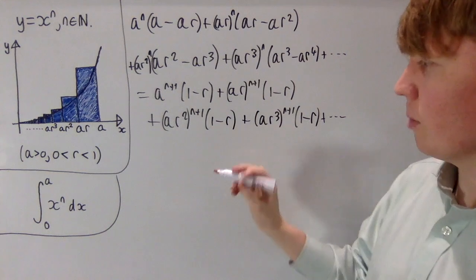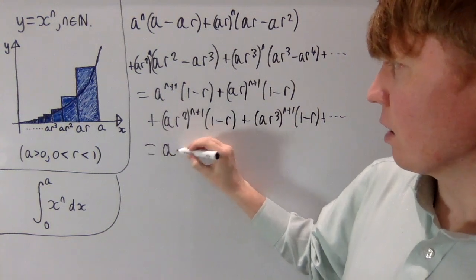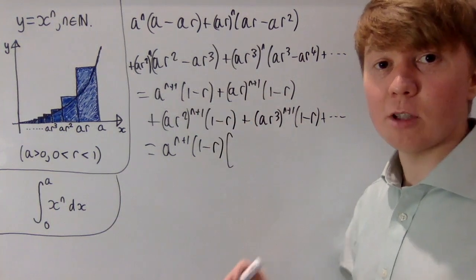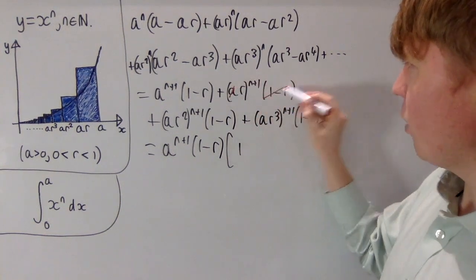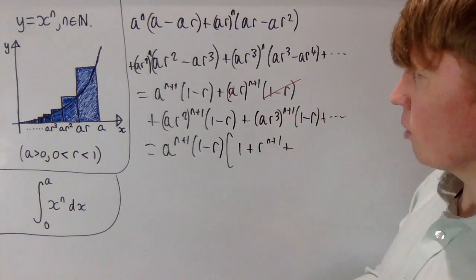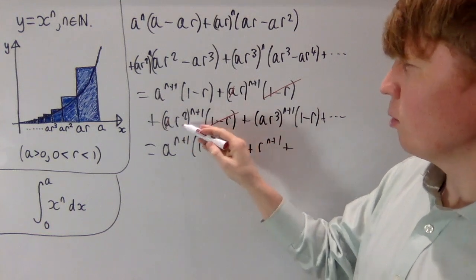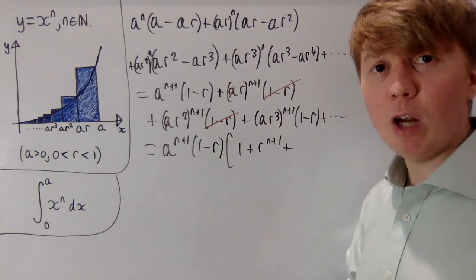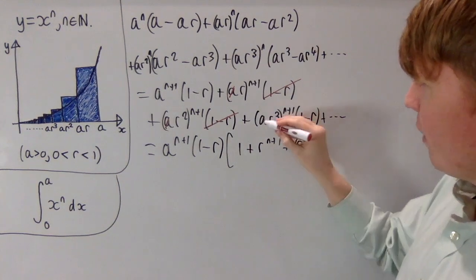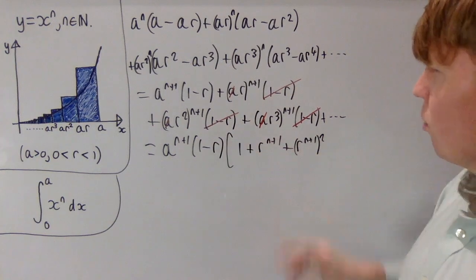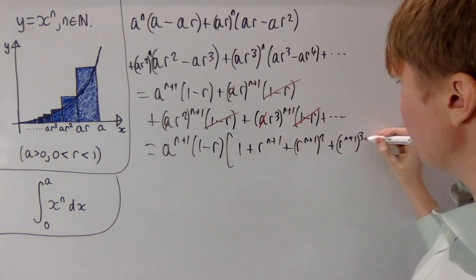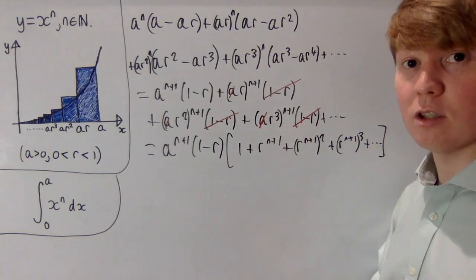We can take out A to the n plus one times one minus R. From the first term we're left with a contribution of one. In the second term, removing the A and one minus R, we're left with R to the n plus one. For the third term we have R squared to the n plus one, which I'll write as R to the n plus one, squared. For the next one we're left with R cubed to the power of n plus one, written as R to the n plus one, cubed. You can see this is now just a geometric series.